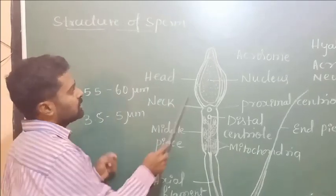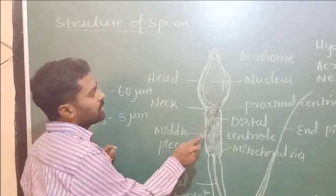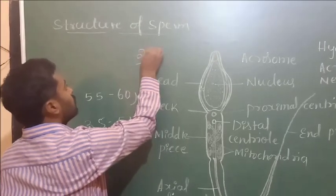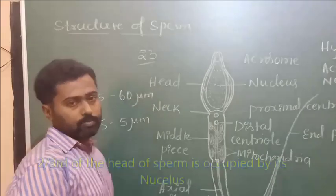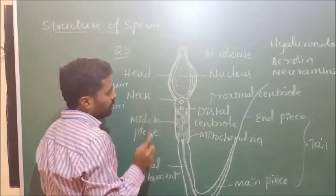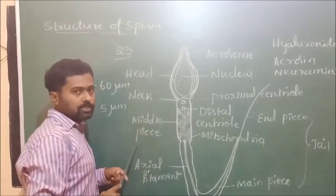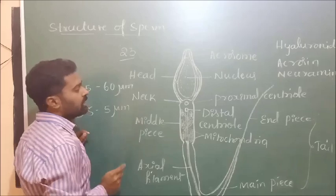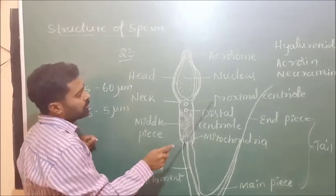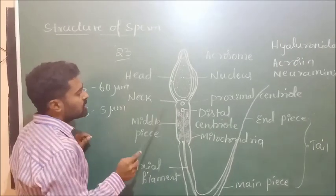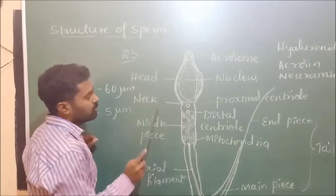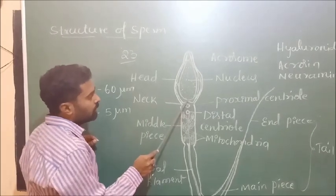The nucleus found in the head of the sperm encloses a haploid set of chromosomes — about 23 paternal chromosomes. Between the head and the middle piece, a small constriction is present called the neck. The neck encloses centrioles: the proximal centriole, found in the concavity of the nucleus, and the distal centriole.